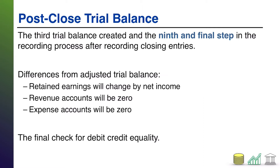It is also the final step of the accounting cycle because at this point we have recorded all the regular journal entries, we have recorded adjusting journal entries, we have produced financial statements, and we have closed our temporary accounts to our permanent accounts, bringing us to this final step, which is really just a safety net — a check step to make sure we don't have any errors before we start the new accounting period.